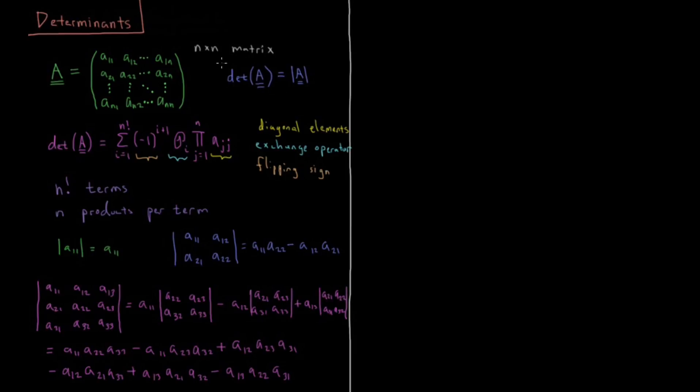So the determinant of A, we can represent by this det open parenthesis of A, or we can represent it by this kind of vertical bar, the type of magnitude type symbol that we use for vectors.